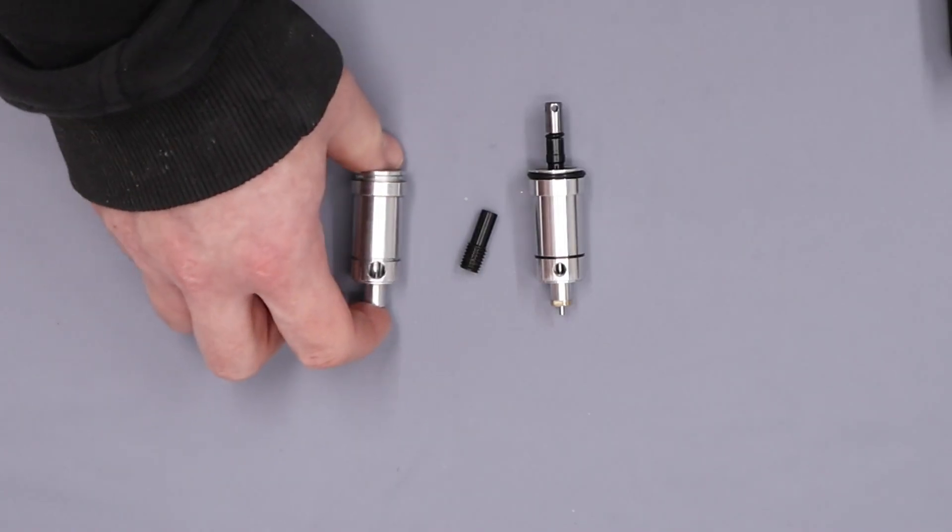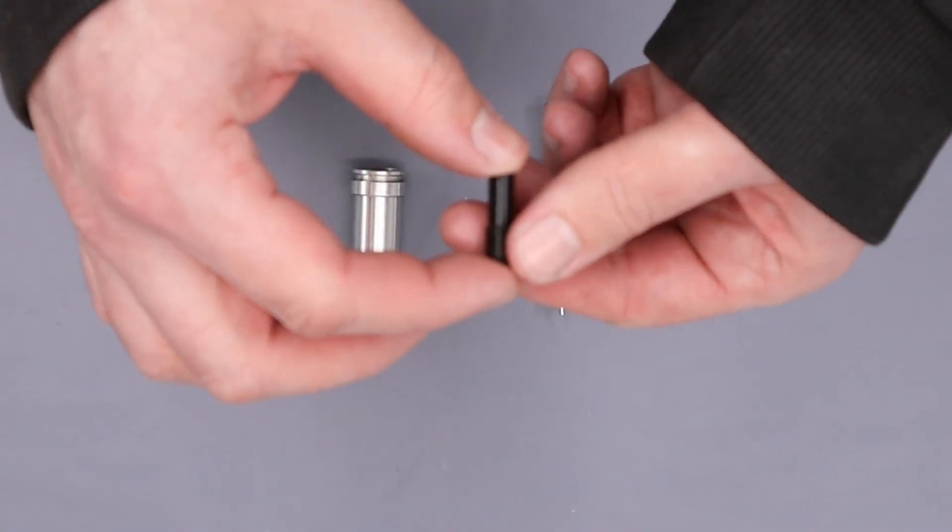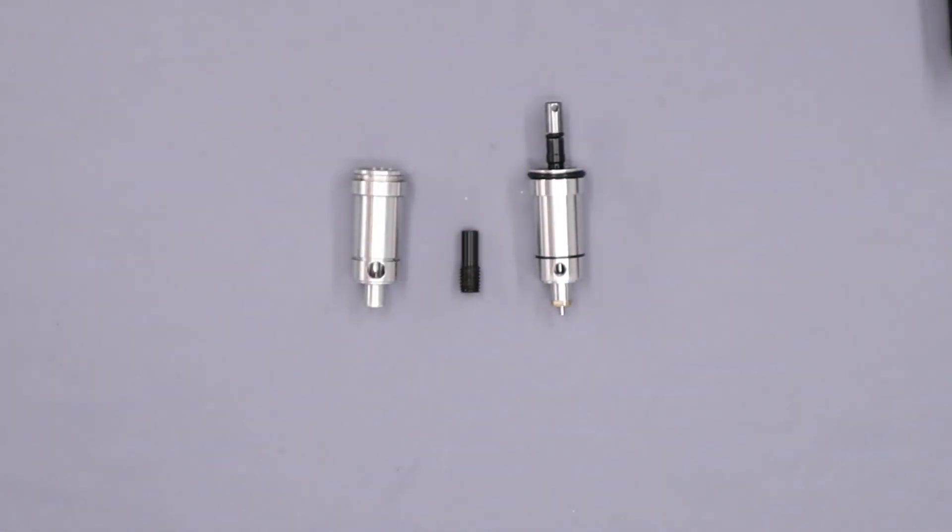The other thing that you see here is a transfer port sleeve which fits inside the block of the rifle. The transfer port in the block of the rifle is around 6.7mm in diameter and as we've reduced the hole in the valve we also need to reduce this. And in our testing we're using the transfer port sleeve in conjunction with the valve to get us our results.